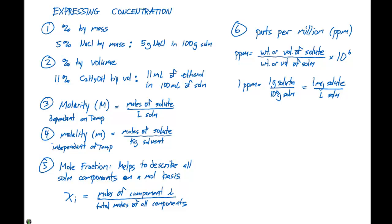This typically comes into play with a lot of environmental type issues where our concentrations are extremely small. The last one, very similar to part per million, is part per billion, abbreviated ppb, and this is one gram of solute per 10 to the ninth grams of solution.